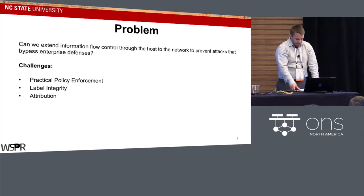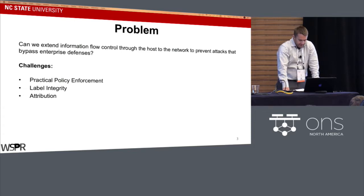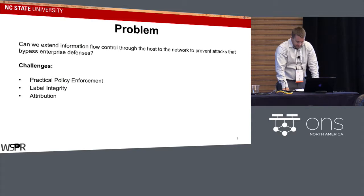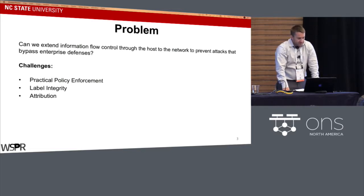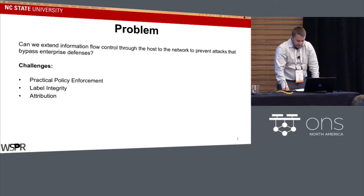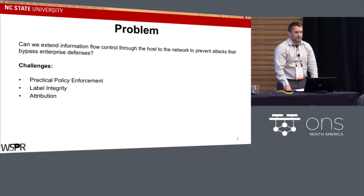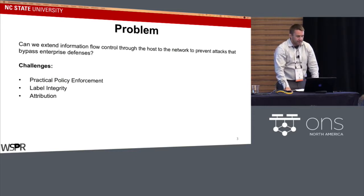We see three key problems. The first is practical policy enforcement — a lack of accuracy in our policy can cause propagation labels to fail, and coarse precision can cause false positives that lead to taint explosion. Next, there are statistical means of detecting stepping stone attacks, but they don't use persistent labels, and persistent labels cannot survive transformation at intermediate steps.